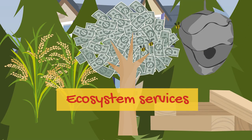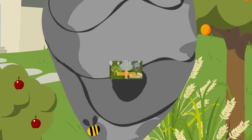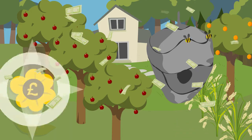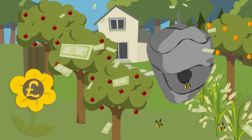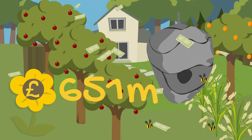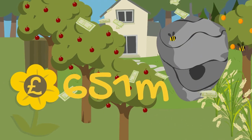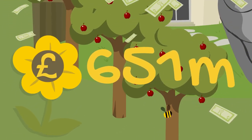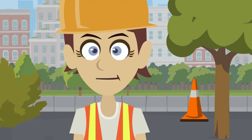We're only now just starting to put a value on these services, which are often called ecosystem services. For example, it is estimated that the pollination services provided by bees is worth £651 million to the UK economy each year — and the bees do this completely for free. From a construction perspective, biodiversity matters because you are highly likely to encounter a plant or animal on every construction site.